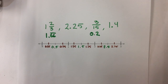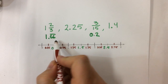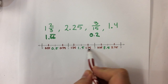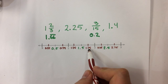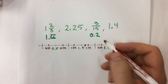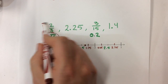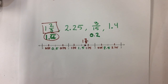Now I'm going to take that first number, 1 and 66 hundredths, and find it on the number line. Here's 1 and 50 hundredths, here's 1 and 75 hundredths — so it must be in between those two, about halfway between them. I'm going to put it right in between those and label it. I'll write the fraction: 1 and 2 thirds goes right about there.